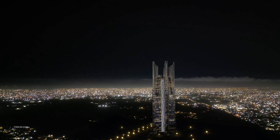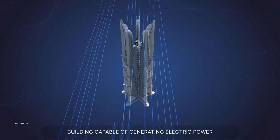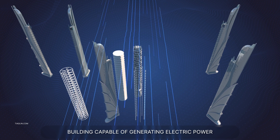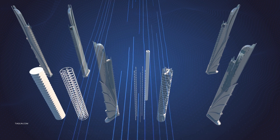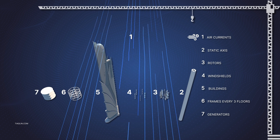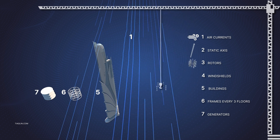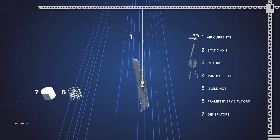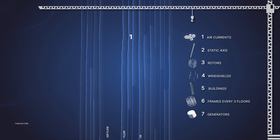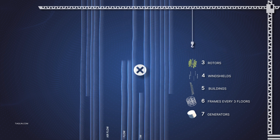Let's look at the basic and necessary building elements to generate energy: 1. Air currents, 2. Static axis, 3. Rotors, 4. Aerodynamic shields, 5. Buildings, 6. Frame every three floors, 7. Generators. Now we will assemble the building sequentially. The vertical wind farm rotation is created by airflow, for example, wind.